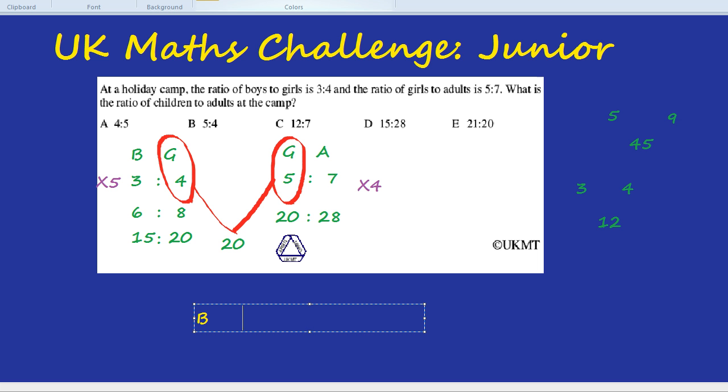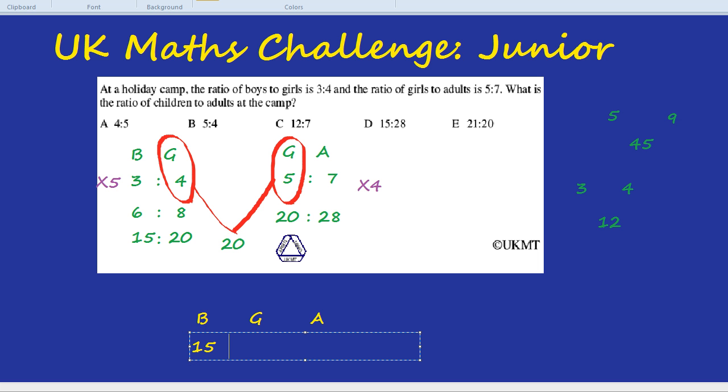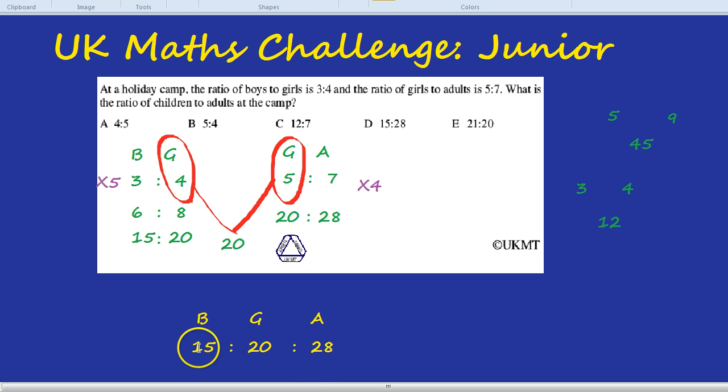So boys, girls and adults would be 15, every 15 of the boys you get 20 of the girls and with 20 of the girls you get 28 of the adults. And just to double check because my answer now would be perhaps 15 to 28 boys to adults, which is here, D. But I need to read the question again because it's the ratio of children to adults.